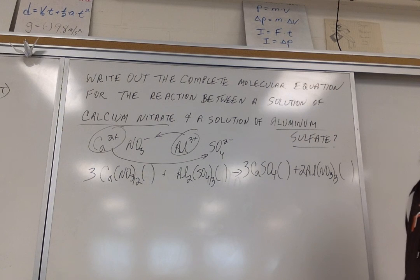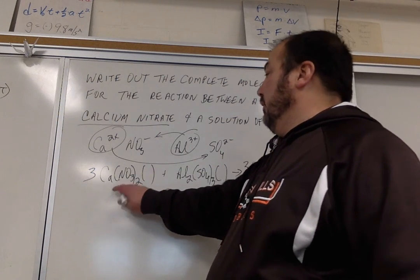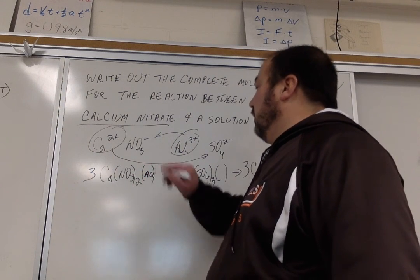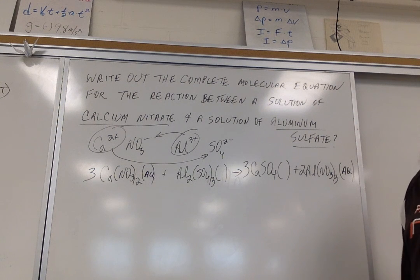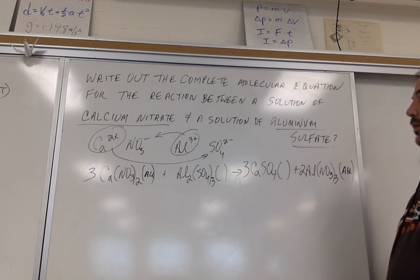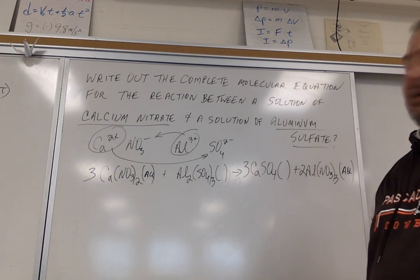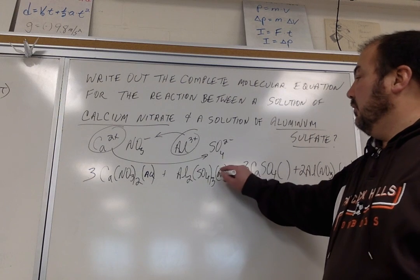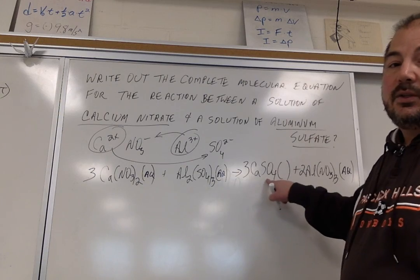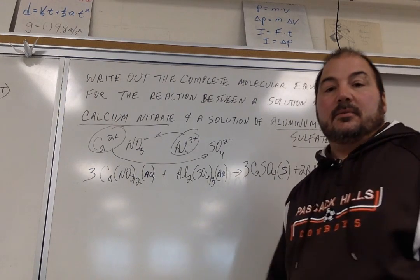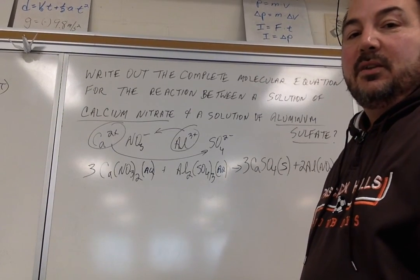Finally, then we're going to write out our phases. So we go to our solubility rules. Rule two, nitrates are always soluble. So that's aqueous. And this one on the end here is aqueous. Rule four says that sulfates are soluble except for silver, mercury, lead, calcium, strontium, barium. So this one is soluble, but this one is not because calcium is one of the exceptions here. So that is a solid. All right. So we're going to give that a try and then we'll pick up with the next piece of the puzzle.